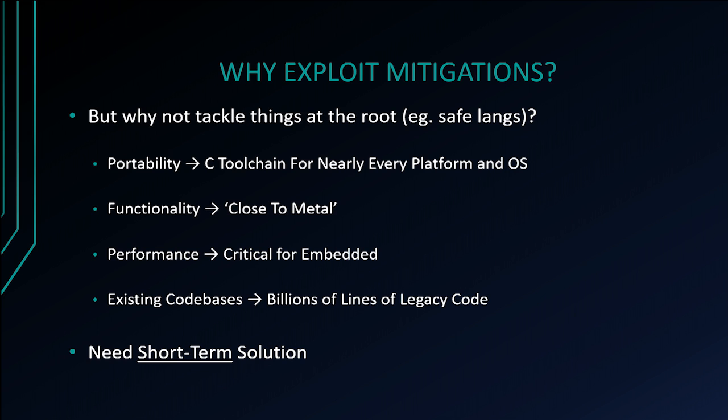Why focus on exploit mitigations rather than tackling things at the root by using safe languages? Especially in the embedded world, that's not going to happen anytime soon. First, there are portability issues — a C toolchain exists for nearly every platform, which isn't the case for most safe languages. Second, functionality constraints: C is very close to metal, giving access to functionality not available in most safe languages. Third, performance is critical, especially for real-time embedded systems. And finally, there are billions of lines of legacy C code that aren't going to be ported anytime soon. So we need short-term solutions, and we believe exploit mitigations to be such a solution.